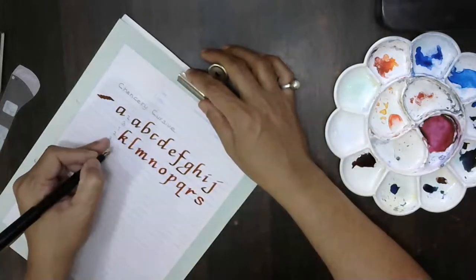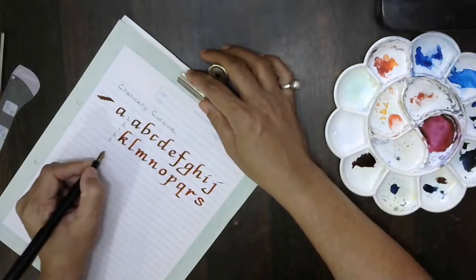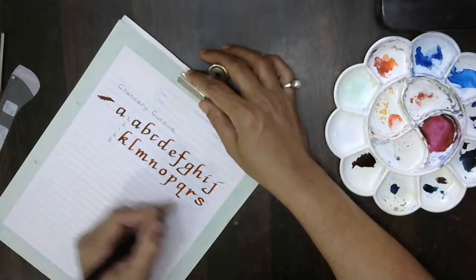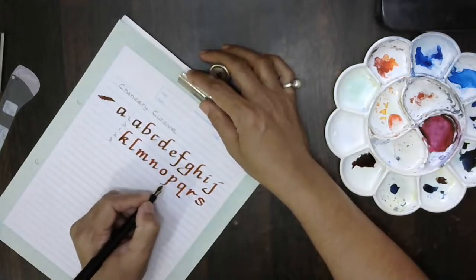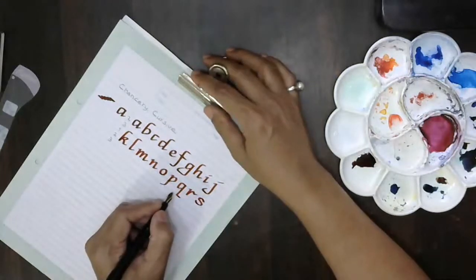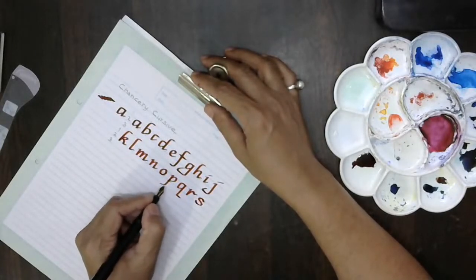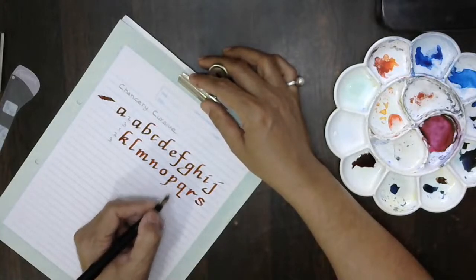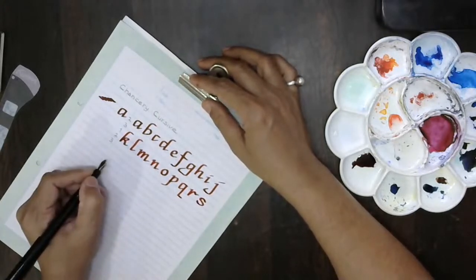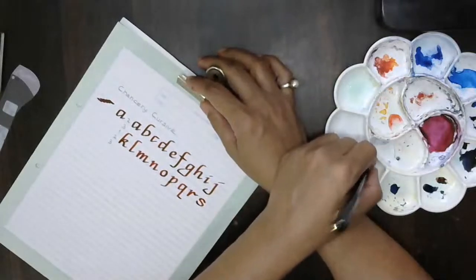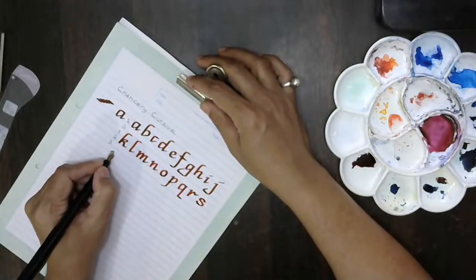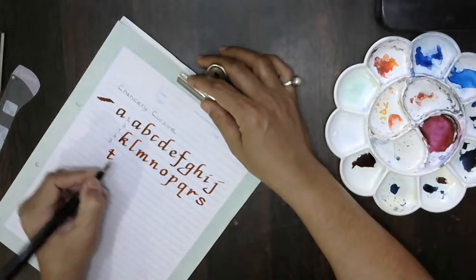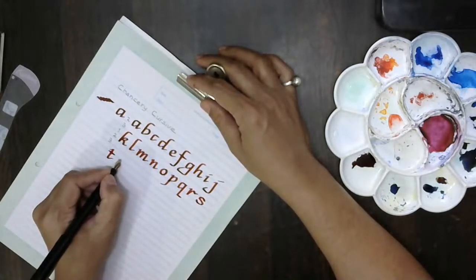Then s, t. What we have to do is write on the second line and not here because otherwise in your writing the ascender part of the alphabet will get tangled with the descender of the alphabet which we have written before.